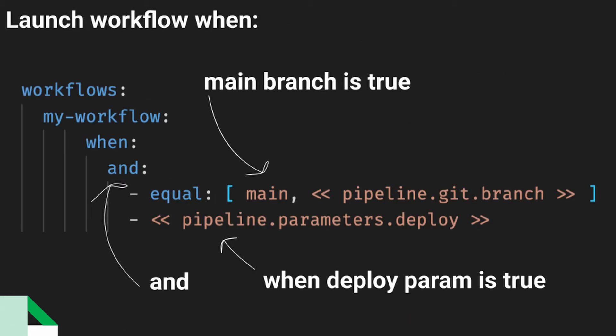So let's take a look at a specific example. With the and key, all of the conditions passed into it must return true. We have pipeline.get.branch, and it must be equal to main. And we're also supplying a pipeline parameter value directly to it — you get to define the types for your own parameters, so in this case it's probably a true or false value. And both of those must be true in order for this workflow to run.